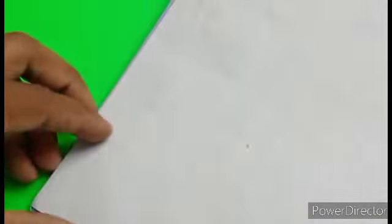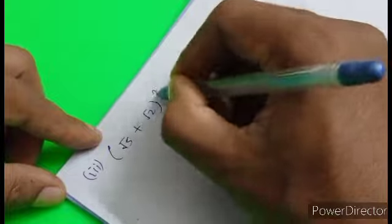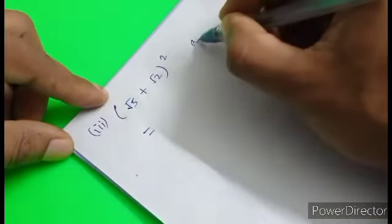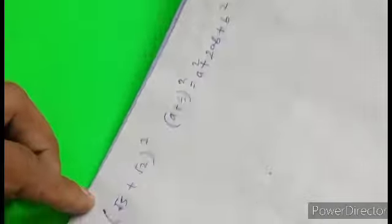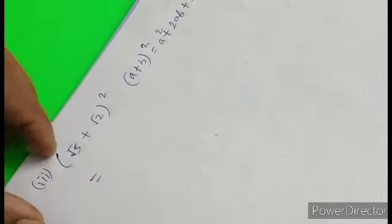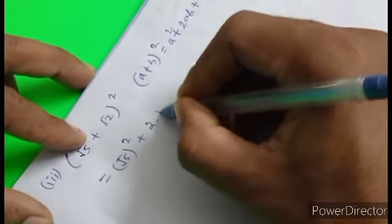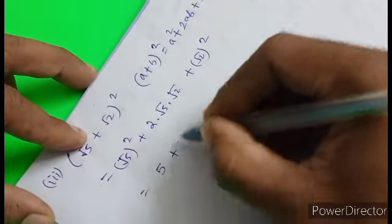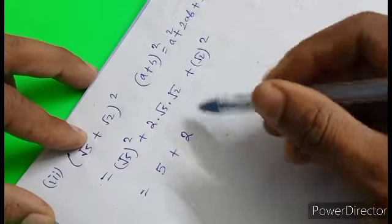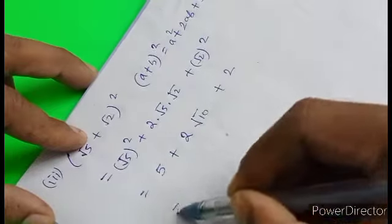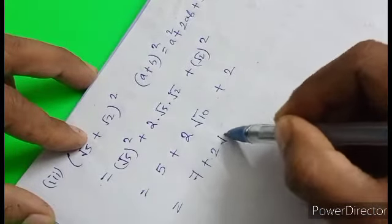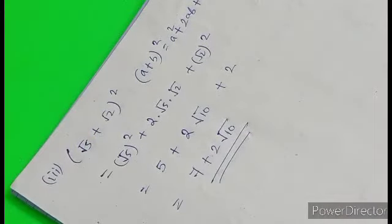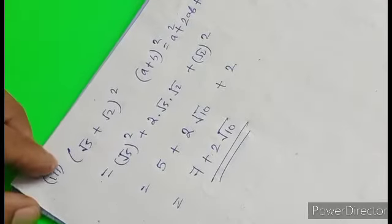Now roman numeral three: (root 5 plus root 2) whole square. This is in the form (a plus b) whole square, which equals a squared plus 2ab plus b squared. Expanding: root 5 squared is 5, plus 2 times root 5 into root 2 which is 2 root 10, plus root 2 squared is 2. So the answer is 7 plus 2 root 10.